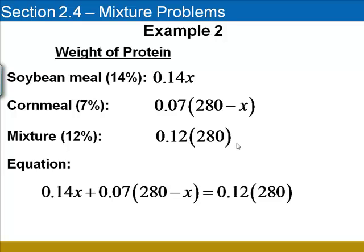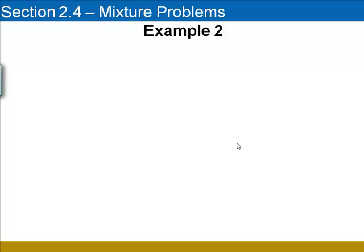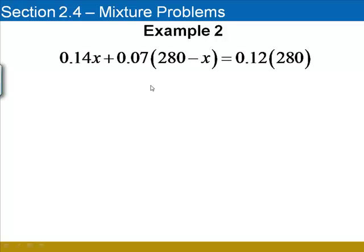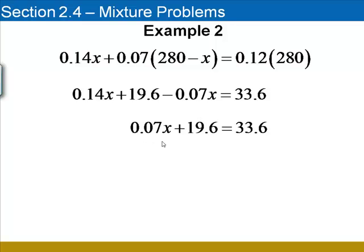Okay, we'll solve this equation just as we solved the last one. Begin by distributing 0.07 on the left-hand side of the equation and multiplying the two numbers on the right side. Next, we'll combine like terms, 0.14X minus 0.07X is 0.07X. Now we'll subtract 19.6 from both sides to isolate the variable term. And we finish by dividing both sides by 0.07. We come up with X equals 200.